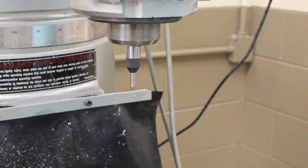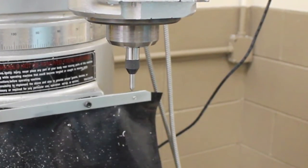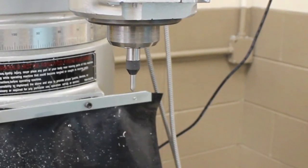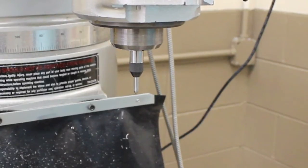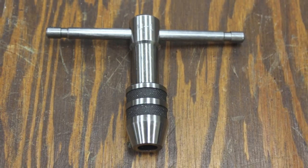Tapping may be performed by hand, but is often performed while still on the milling machine. Place a 60 degree center into the tool holder. The center will hold the tap vertical while turning.